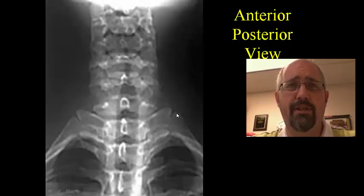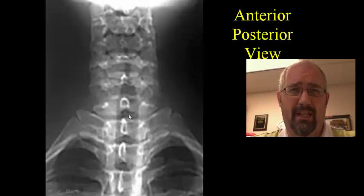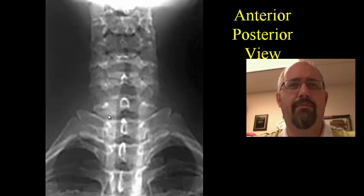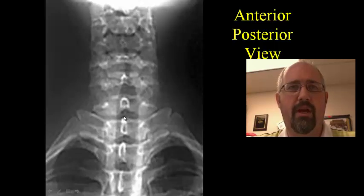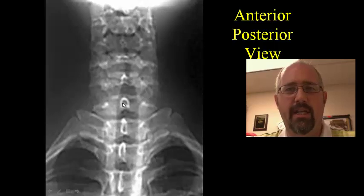Looking from an anterior to posterior view, it's pretty hard to see in some ways, but you can just see the definition between the vertebral segments coming through here, and so you can see where the discs are going to be. Then we're looking right at the spinous processes in an end-on sort of positioning.